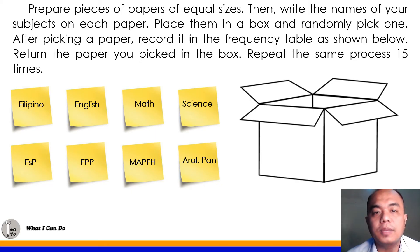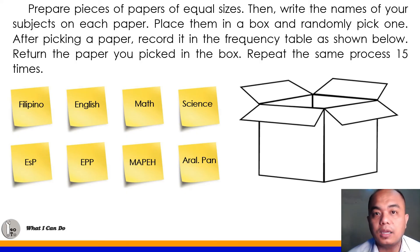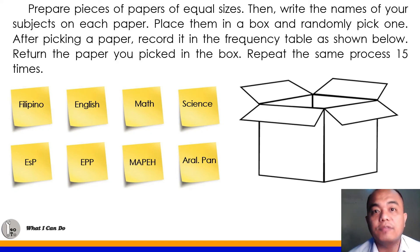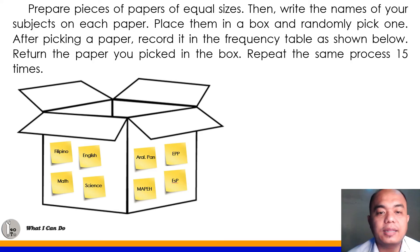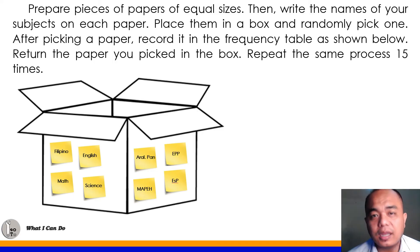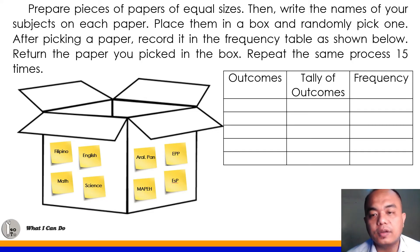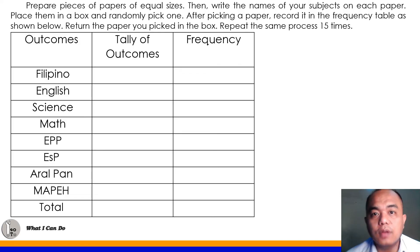Place them in a box and randomly pick one. Ilalagay natin yung mga papel na yan sa loob ng box and then we will randomly pick it one at a time. After picking a paper, record it in the frequency table. Return the paper you pick in the box — pagkatapos mong ipick yung isang papel, tapos pagkatapos mong i-record yung results sa frequency table, ibalik mo yung papel na bunot mo sa loob ng box. Then repeat the same process 15 times. Again, your experiment result may vary on the sample result that I'll be showing to you later on. Ilalagay natin yung 8 na pieces of paper inside the box, pick one at a time, and then do this 15 times. This is the sample frequency table.